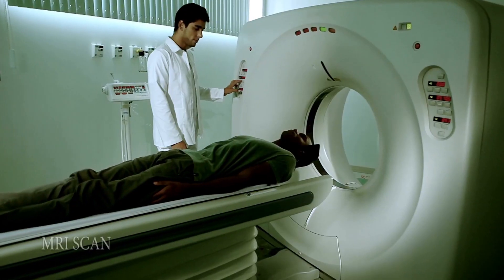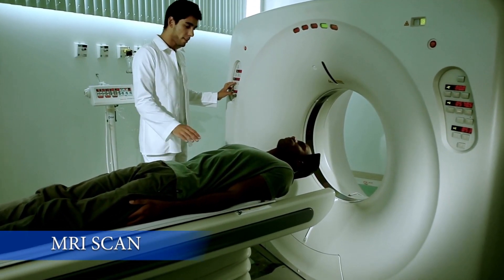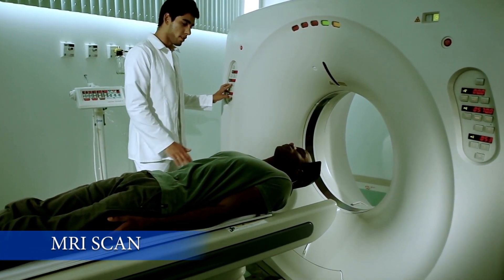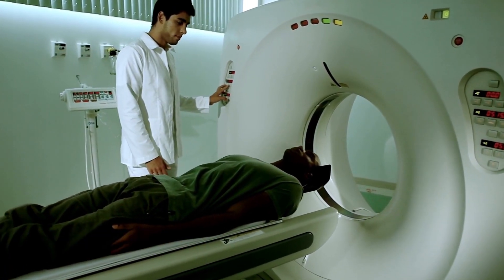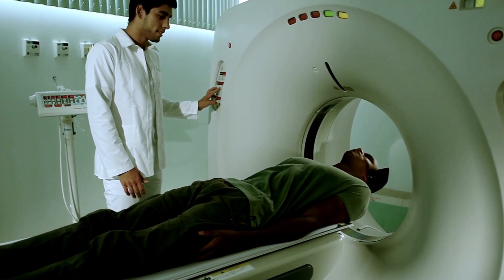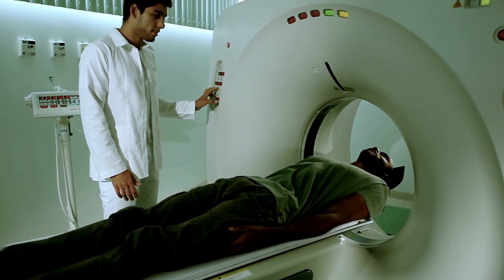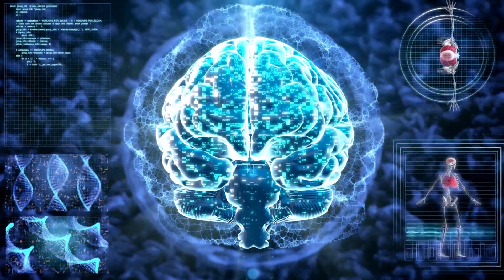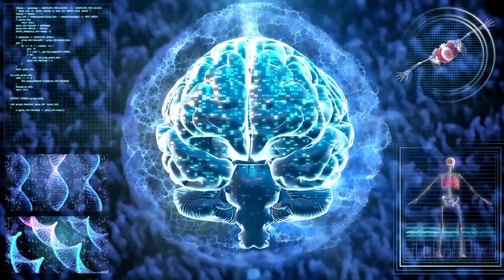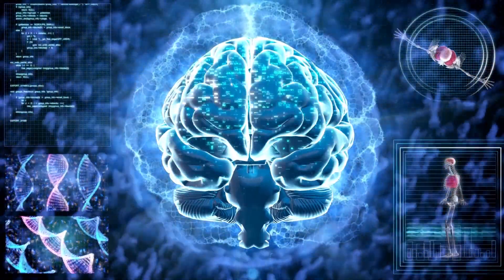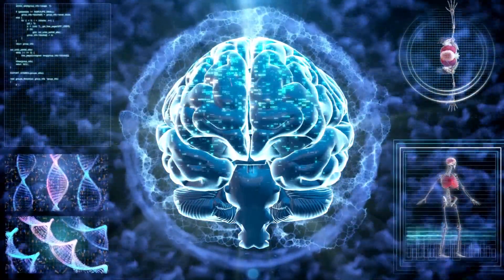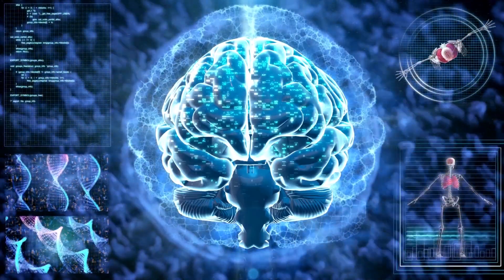What is an MRI? MRI stands for Magnetic Resonance Imaging. It uses a magnetic field and radio waves to make detailed pictures of the inside of your body. These images are layered on top of each other to provide radiologists with a clearer understanding of the inside of your body.